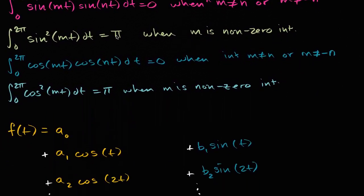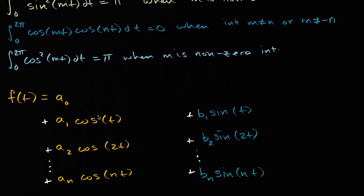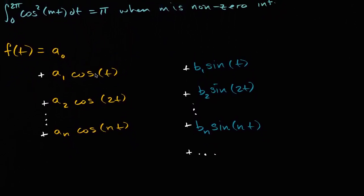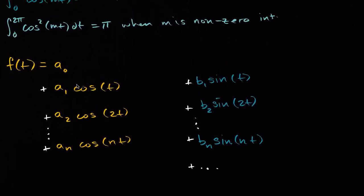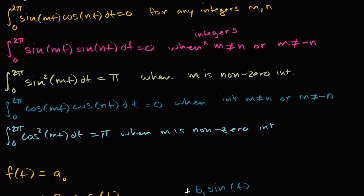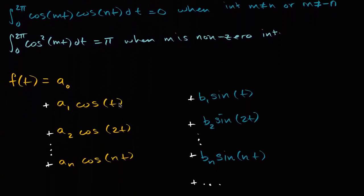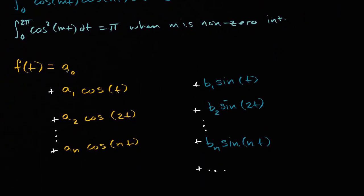Right over here I have rewritten a Fourier series expression for a periodic function f of t — let's say its period is two pi. I'm going to use this along with the properties we have established to start solving for these actual coefficients.